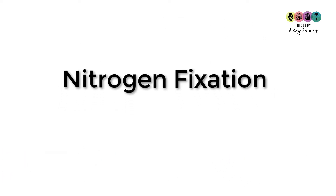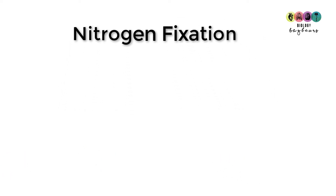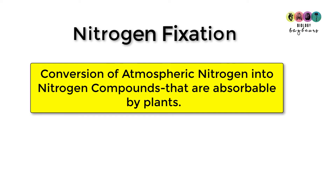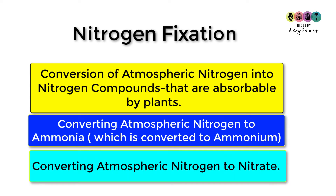Step number one in the nitrogen cycle is nitrogen fixation. This is the conversion of that unreactive atmospheric or gaseous nitrogen into nitrogen compounds that are absorbable by plants — usually converting it into ammonia, which gets converted to ammonium very quickly, or directly converting atmospheric nitrogen into nitrates.